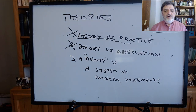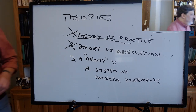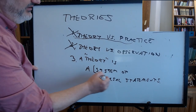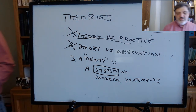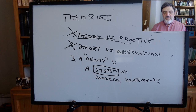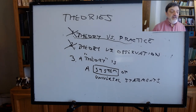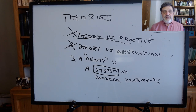The word 'system' here is important — it has content to it. It's not just a synonym for 'set.' A theory, as Popper understands it, is not just a bunch of universal statements. It's a system of universal statements. You can tell what that means by comparing what he says in this chapter about empirical theories to what he said in the last chapter when defending methodology as a kind of science.